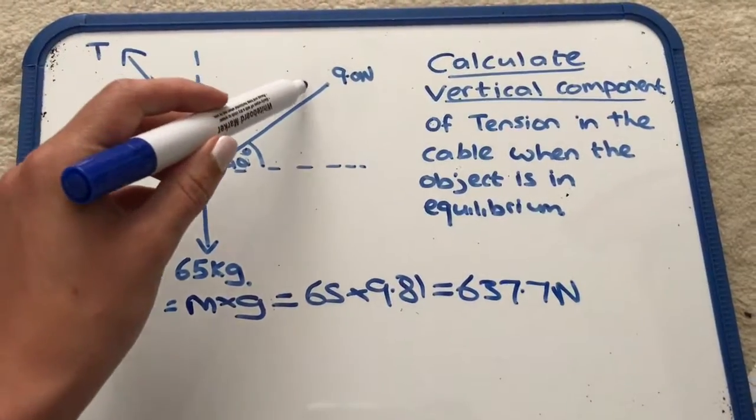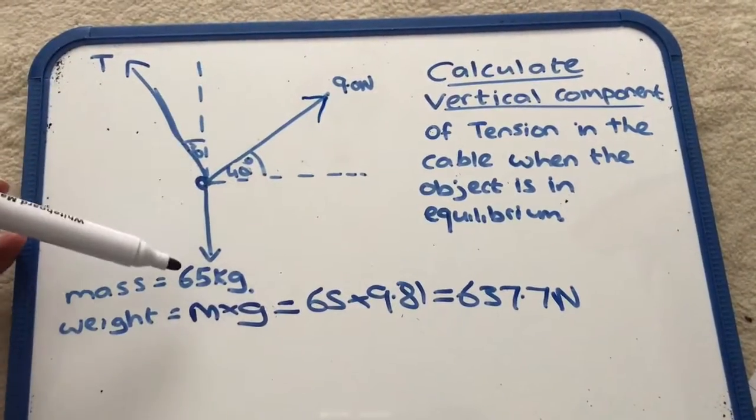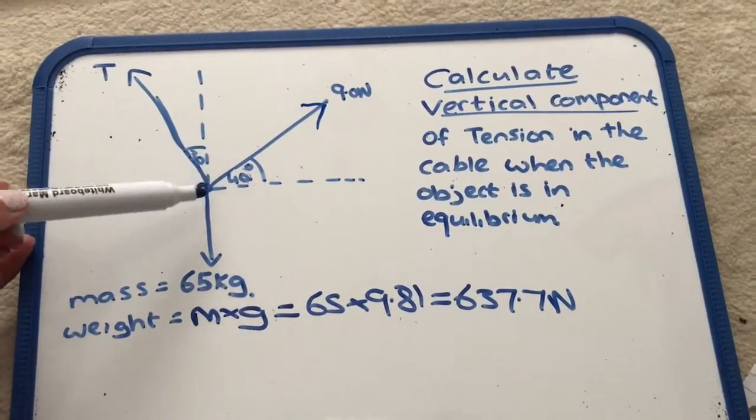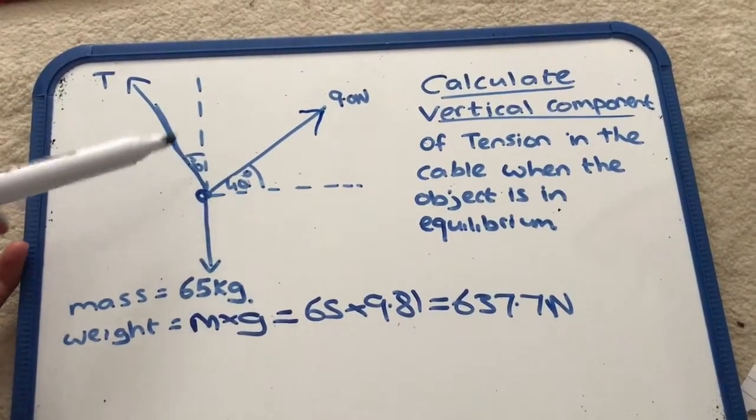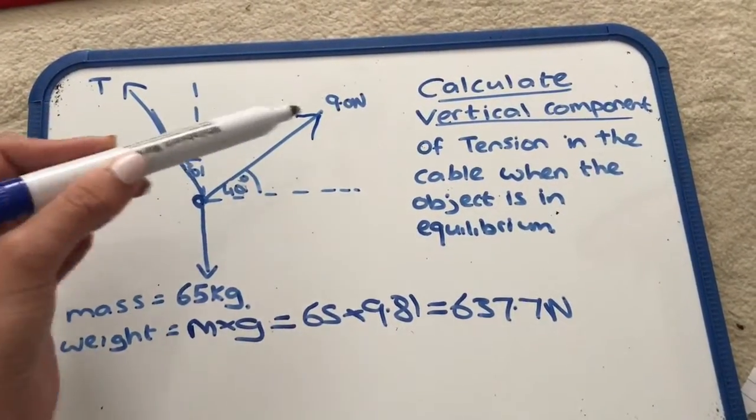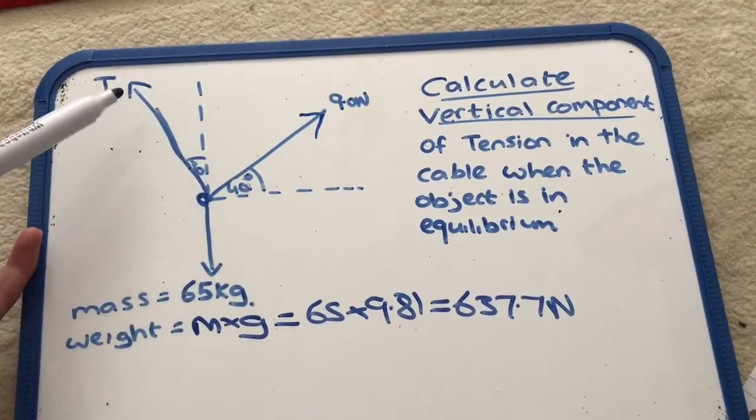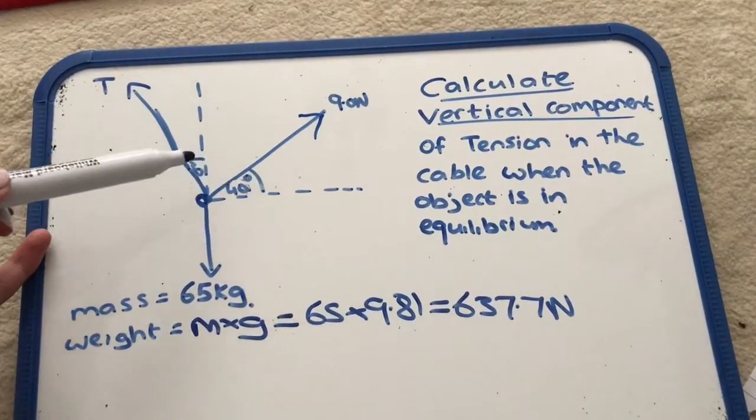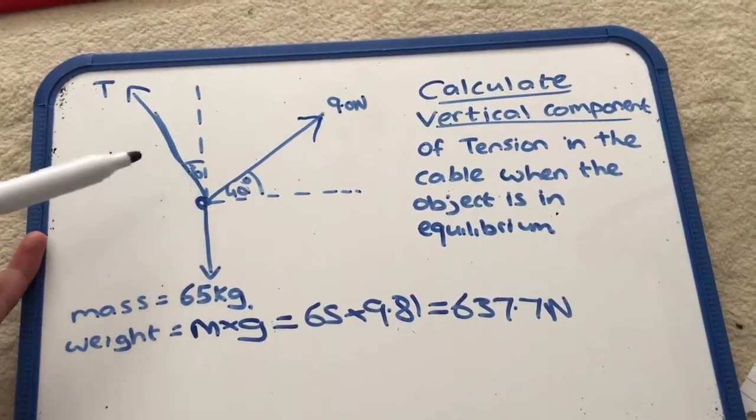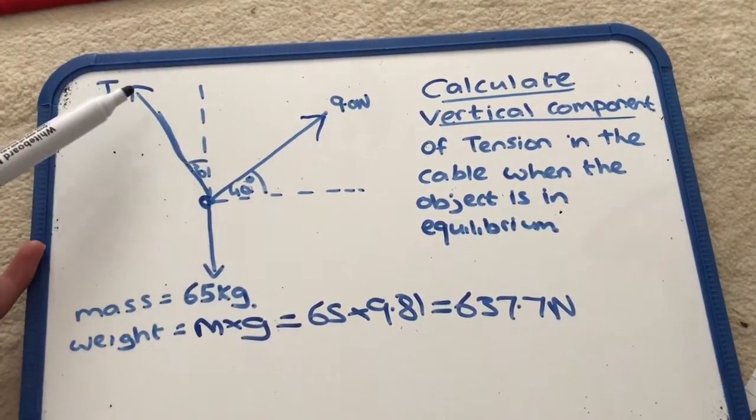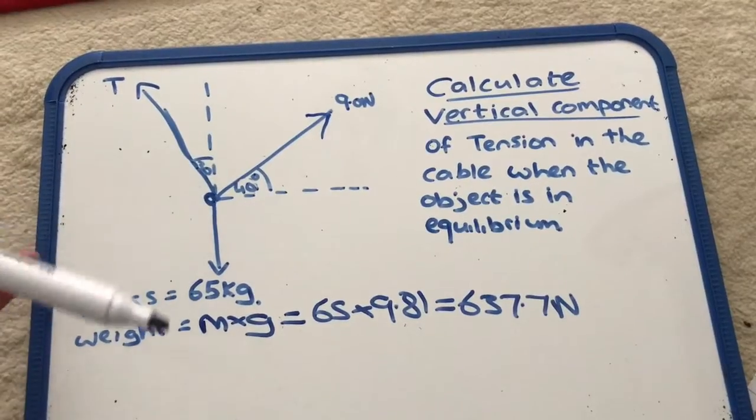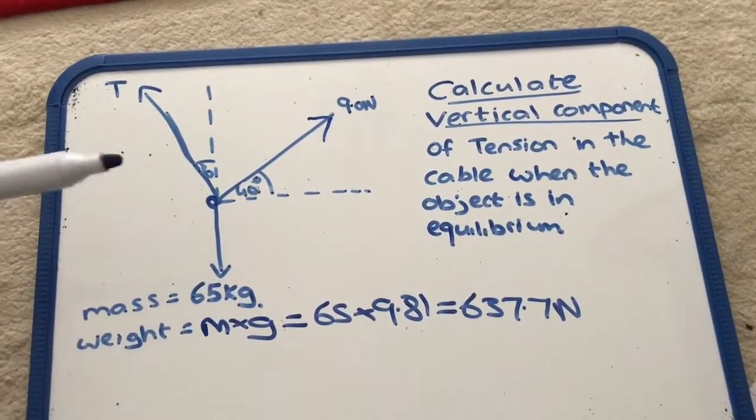Okay, so that is what is acting down. We have two different things acting in the opposite direction, so we have this 9 newtons acting at an angle of 40 degrees, and we have the tension which we want to find acting at an angle of 30 degrees. As these guys are acting at angles, we have to resolve them into their vertical and horizontal components.